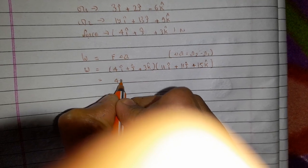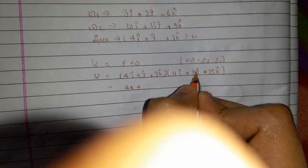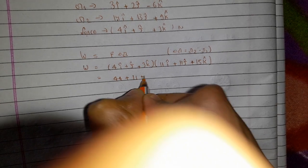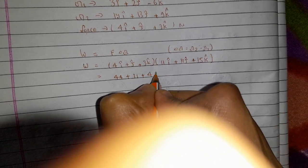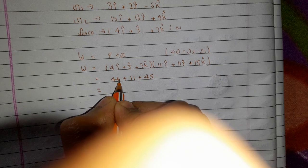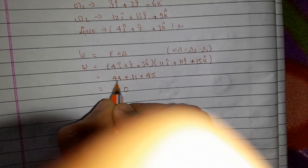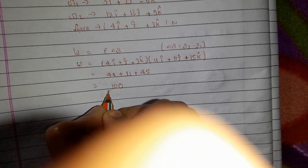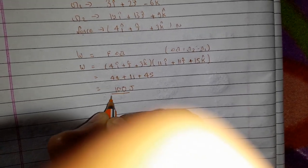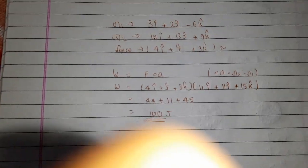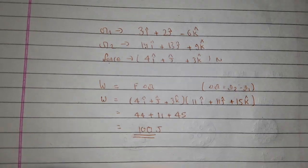Work done will be 11 into 4, that's 44, plus 11 into 1, that's 11, plus 3 into 15, that's 45. And adding up, it will become 100. The answer is 100 Joules. I hope you understand the solution and it helps you. Thank you.